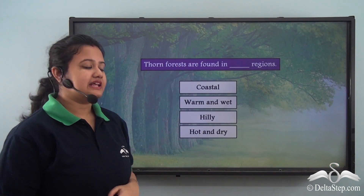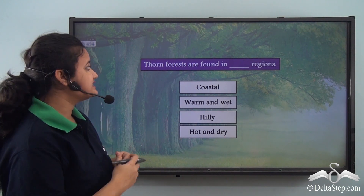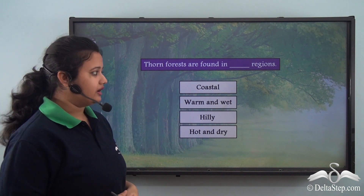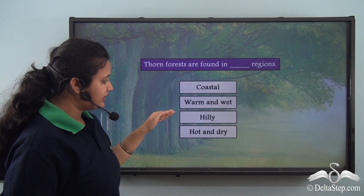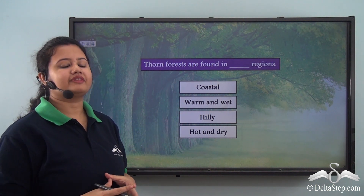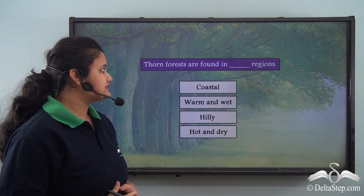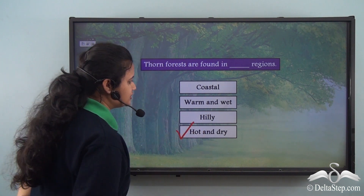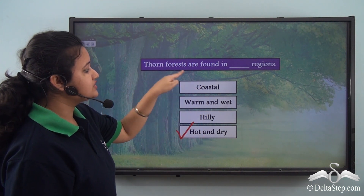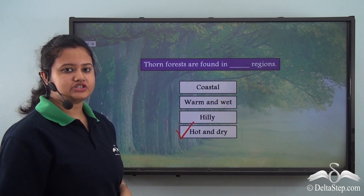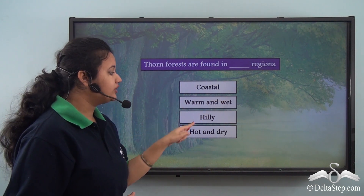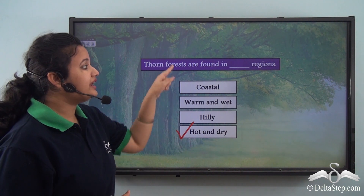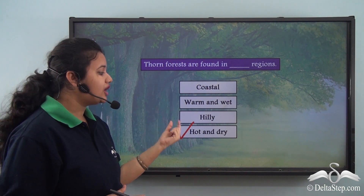Before proceeding, let's answer this objective: Thorn Forests are found in dash regions. The options are coastal, warm and wet, hilly, or hot and dry. We just discussed that thorn forests are found in hot and dry regions. They are neither found in coastal regions nor warm and wet regions nor hilly regions. So the correct option is hot and dry regions, as in the case of a desert.